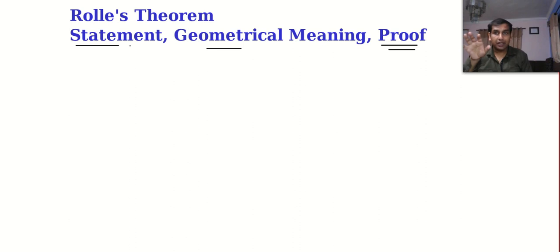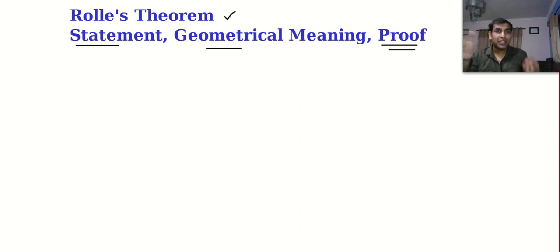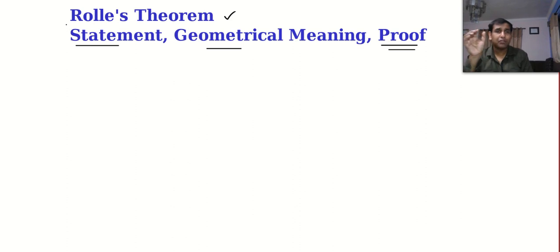First let's look at the statement. This theorem was by a mathematician called Michael Rolle, from the 16th century, even before calculus was properly established. A funny fact is he was more into algebra and never believed in calculus, because calculus was at its introduction in that era. He made this theorem specially for polynomials.